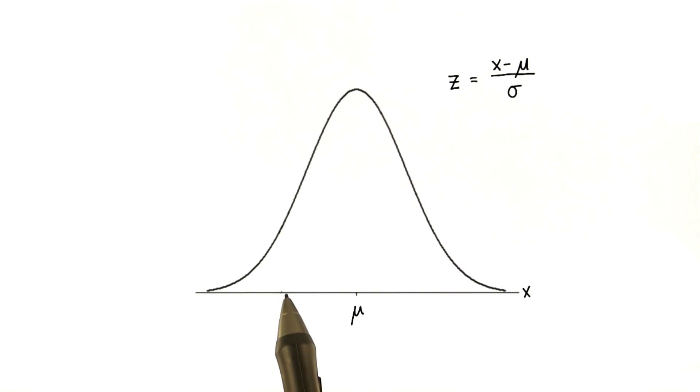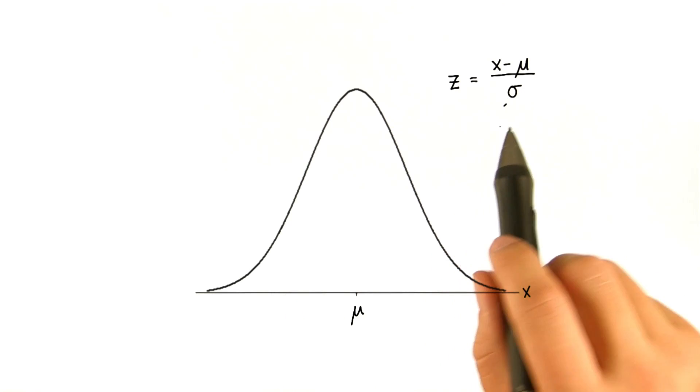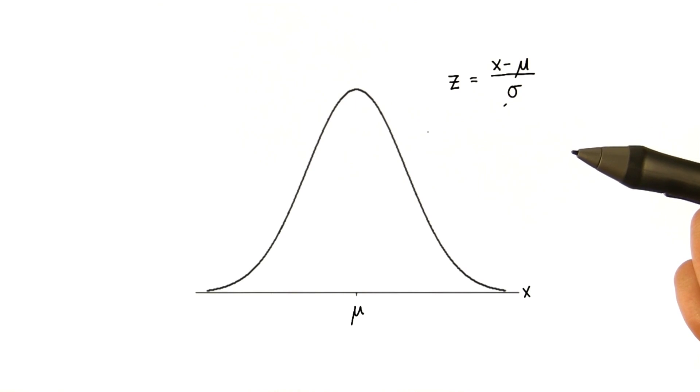So that way, if we have a value less than the mean, we're going to get a negative z-score. The z-score is basically the number of standard deviations any value is away from the mean.